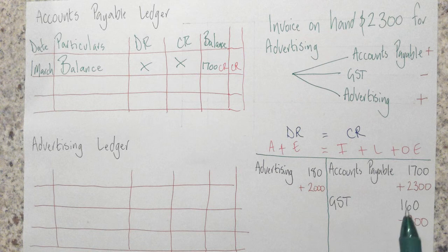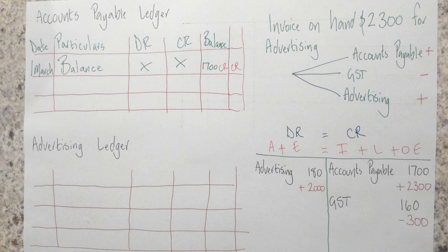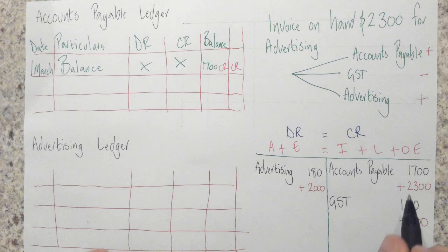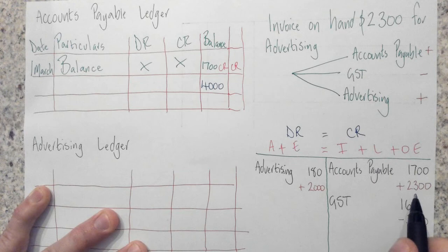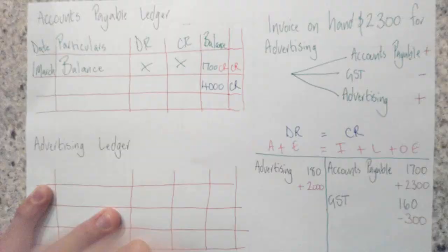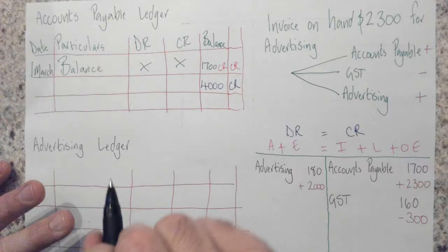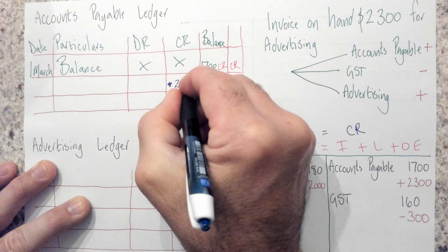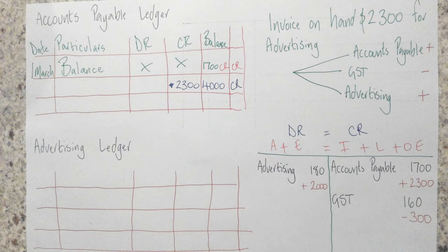The next step is to show what's happened with this transaction — the end balance has gone up by $2,300. I need to work out what's impacted accounts payable for it to change to that total. I'm going to work backwards: I know my end total is going to be $4,000, and it's a credit that's getting bigger, so that's still going to be a credit. That $2,300 has been added as a credit on top to make it an even bigger credit, so it goes in the credit column — $2,300. So 1,700 plus 2,300 equals 4,000.